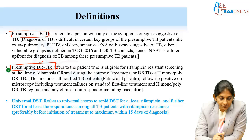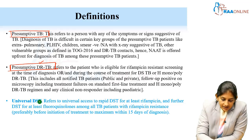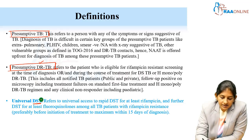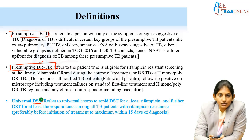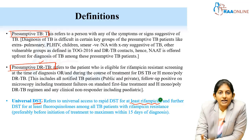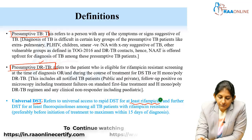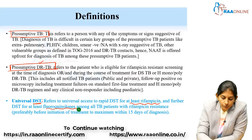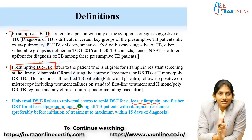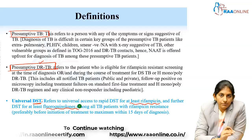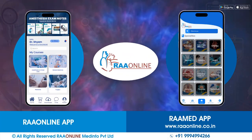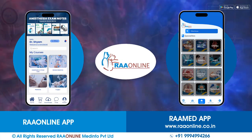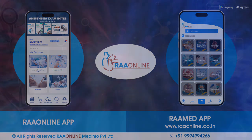Universal DST means drug susceptibility testing. Everyone should have universal access to drug susceptibility testing, at least for rifampicin as the first line. If rifampicin is resistant, further drug susceptibility testing for fluoroquinolones should also be available.